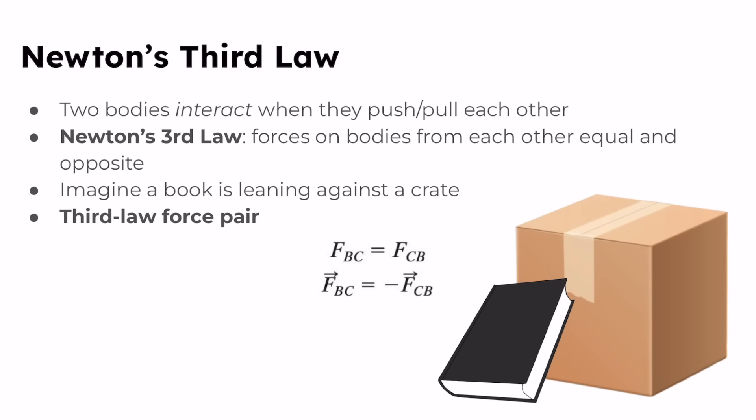For example, we have this book over here. It is applying a force to this crate, and then this crate is applying a force back onto this book in order to keep it from falling against the crate. When two bodies interact, the forces on the bodies from each other are always equal in magnitude and opposite in direction.